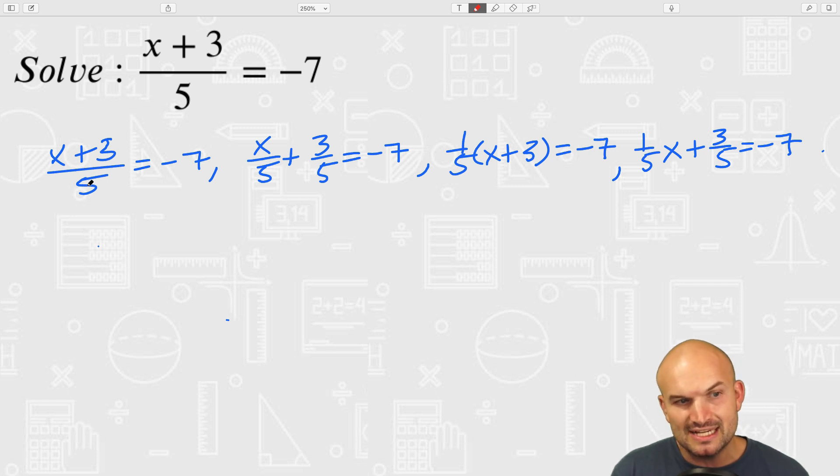The main idea here is if we want to get rid of divided by 5, let's go ahead and multiply by 5, because if you multiply this left hand side by 5, those 5s are going to divide to 1. Remember, whatever you do on the left hand side you have to do on the right hand side. So we're going to multiply by 5 on both sides, those are going to divide to 1, and that leaves us with x plus 3 equals negative 35.